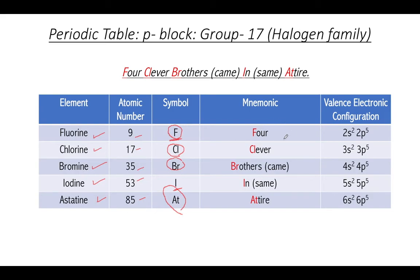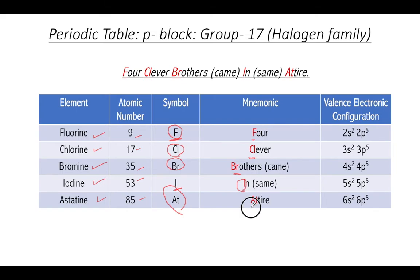The mnemonic for Group 17 is: 'Four clever brothers came in same attire.' From 'four,' capital F represents fluorine; 'clever' gives Cl for chlorine; 'brothers' gives Br for bromine; from 'in' you pick I for iodine; and 'attire' gives At for astatine.